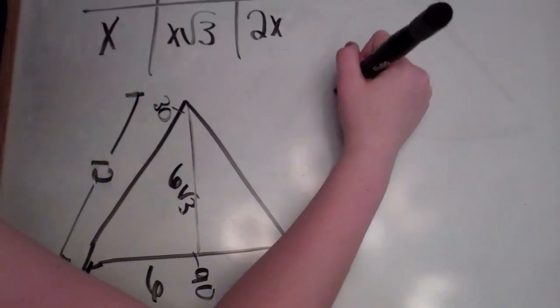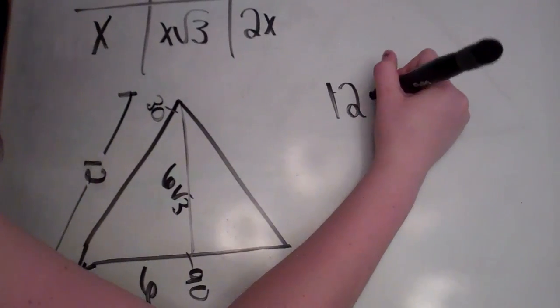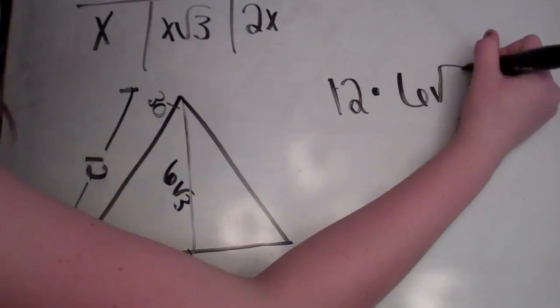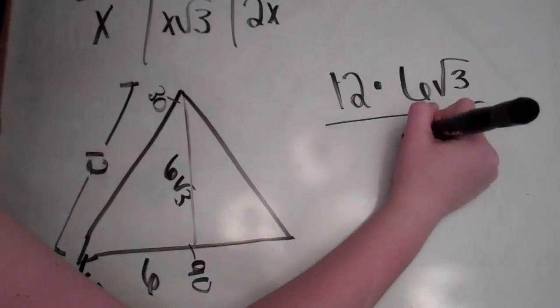You need the whole base, so you go 12 times 6 square root of 3, divided by 2.